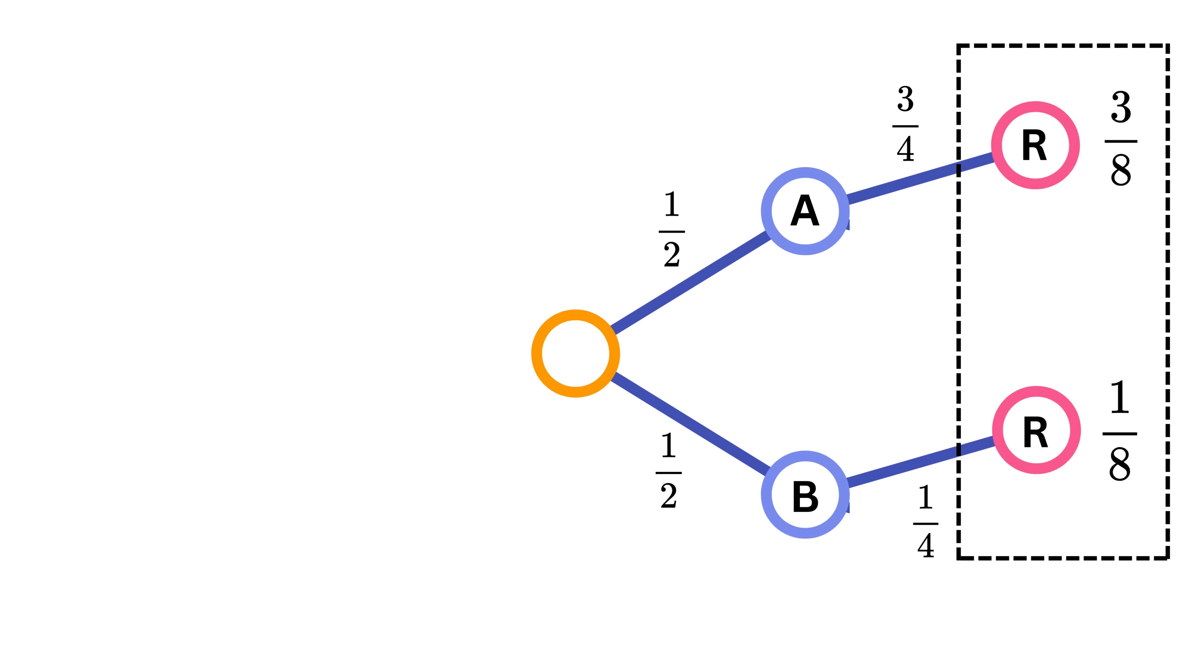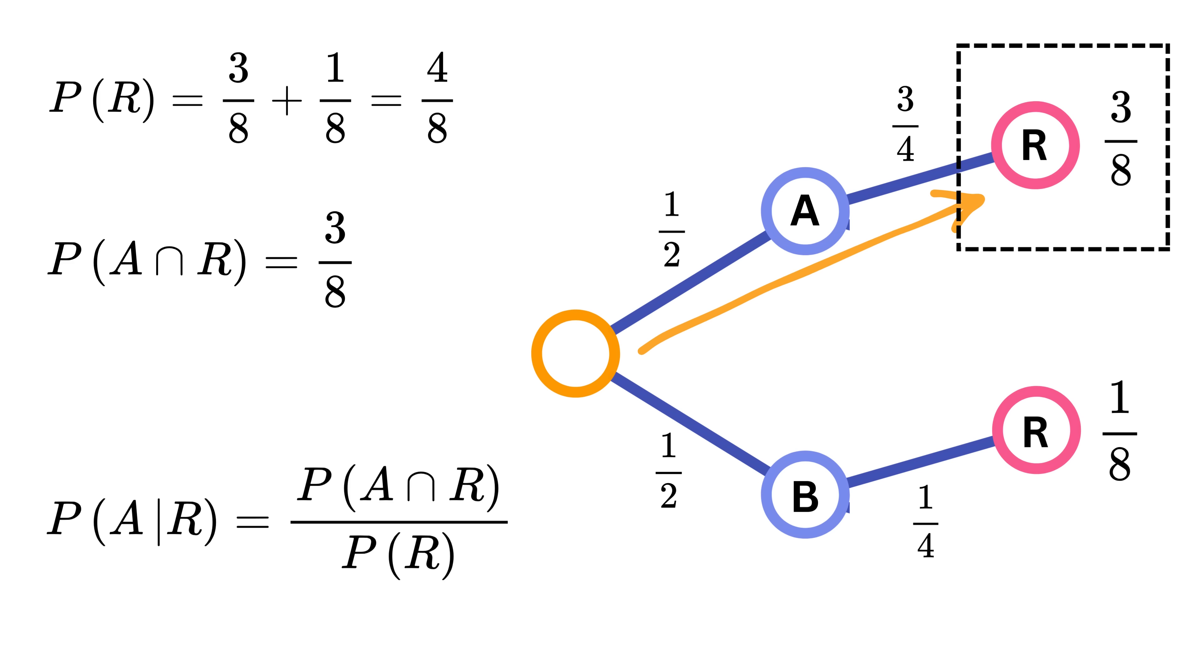Together, these two cases make up all the red outcomes, so the total probability of red is 3/8 plus 1/8 equals 4/8. But we want the share of this red world that only belongs to bag A. That is why we take the part from bag A, which is 3/8, and divide it by the whole red part, which is 4/8.